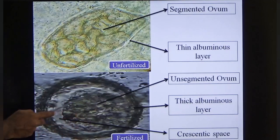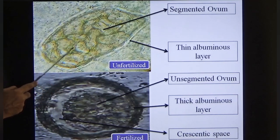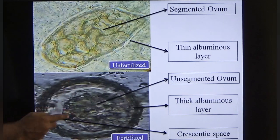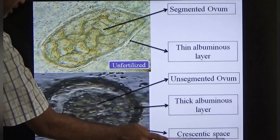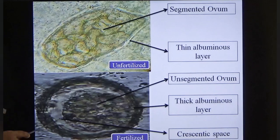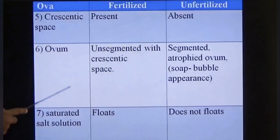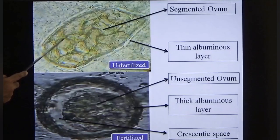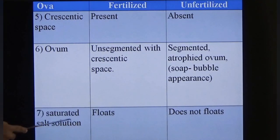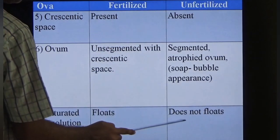Another key difference: the fertilized ovum contains a single unsegmented ovum, while the unfertilized ovum contains multiple segmented cells giving a soap-bubble appearance. Between the ovum and the mammillated layer in the fertilized ovum there is a gap called the cystendric (crescent) space, which is absent in the unfertilized ovum. In brine flotation, fertilized ova float (lower weight) while unfertilized ova sink.